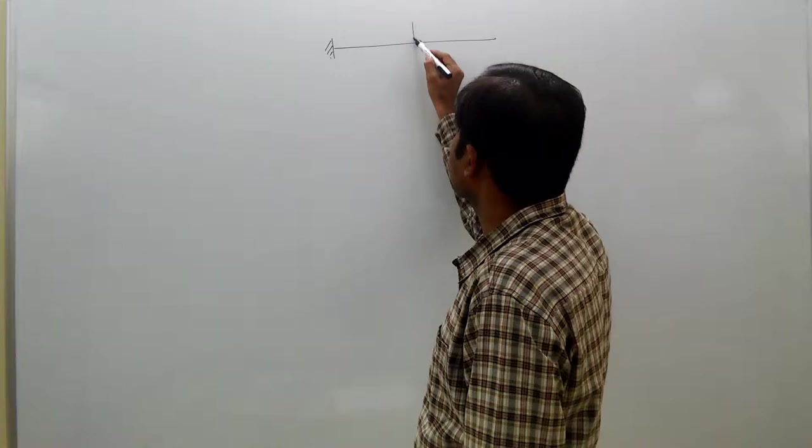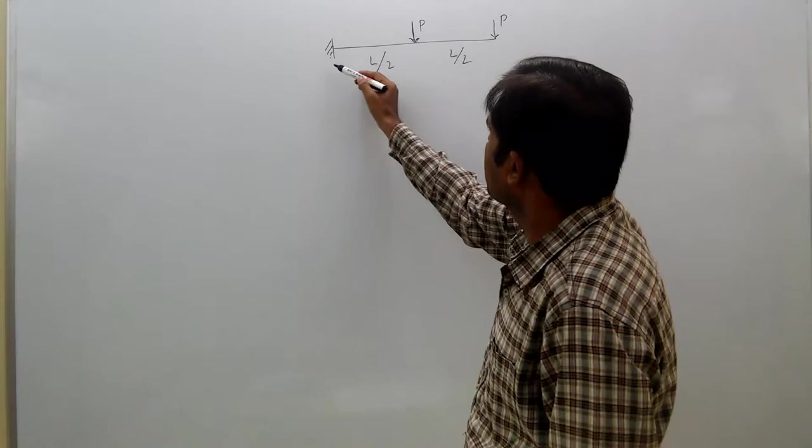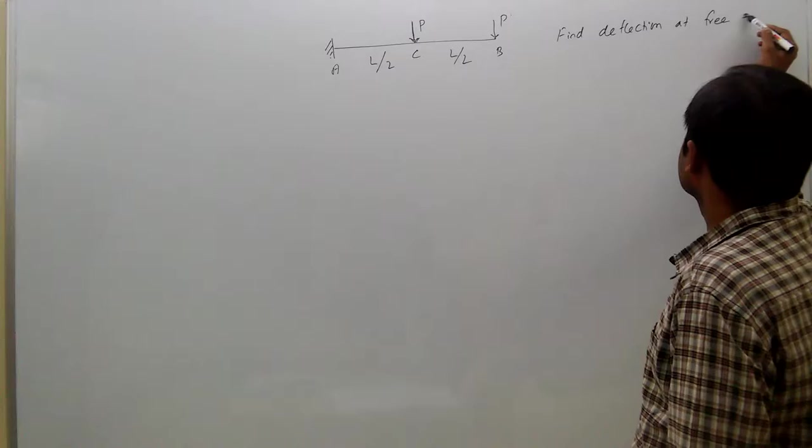A cantilever beam of span L carrying two point loads of magnitude P at the middle and free end. Let us take this as A, this is B, this is C. Find deflection at the free end.